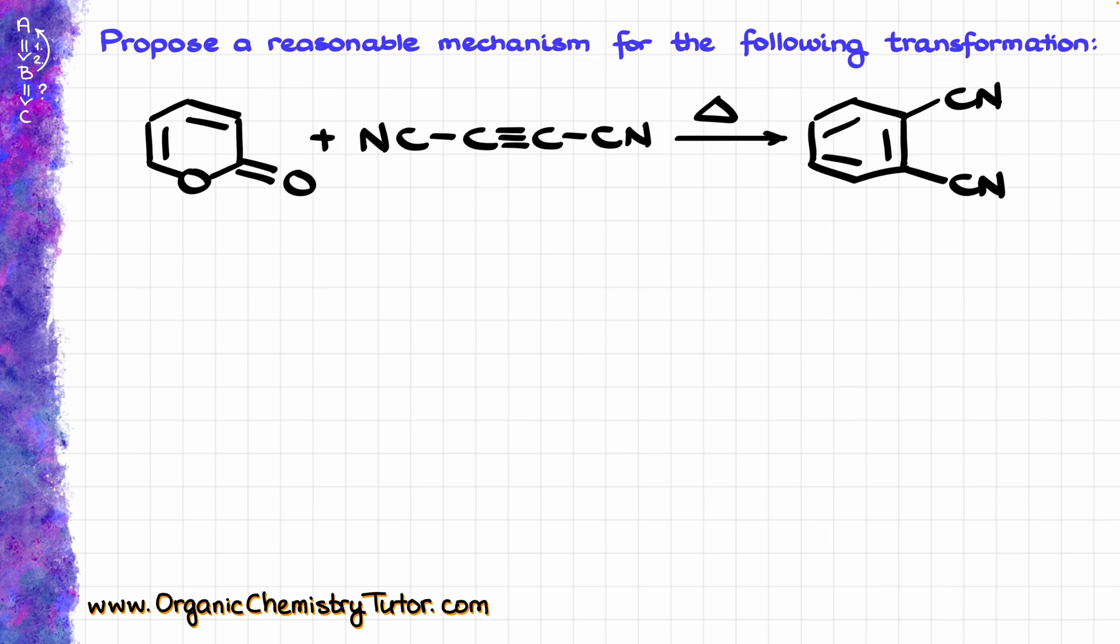Alright, so looking at my molecule, the first thing that I'm seeing here is that my molecule on the right has a couple of electron withdrawing groups flanking the pi bond, so that is going to be a classic dienophile. Likewise, on the left over here, I have a diene, so we are looking at the Diels-Alder reaction in this case.